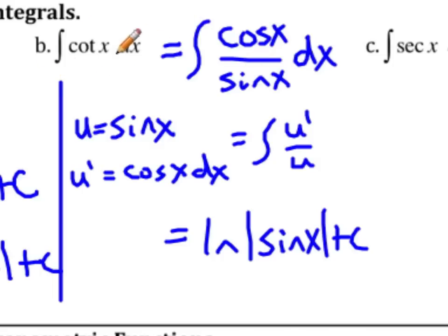So the result is just the natural log of the absolute value of sine x plus C. The integral of cotangent x is the natural log of sine x.